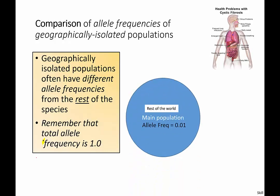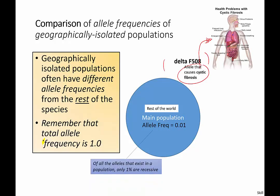Here's an example. If you pretend that this circle represents the main population, and the allele frequency here is 1% for this particular gene — a recessive allele that causes the disease cystic fibrosis — you'll learn about that in many ways. It's the gene called delta F508, if you're interested. So of all the alleles that exist in this population, only 1% are recessive.